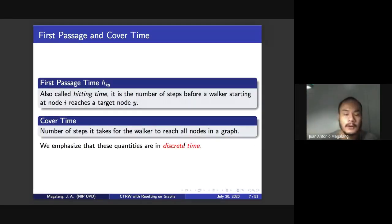Now we want to compute for these two quantities that relate to random walks on graphs. First is first passage time, or also called hitting time. This is the number of steps for a walker starting at node i to reach a target node y. The other one is cover time, which is the number of steps it would take for the walker to reach all the nodes in the graph.